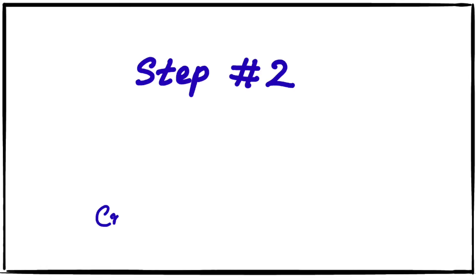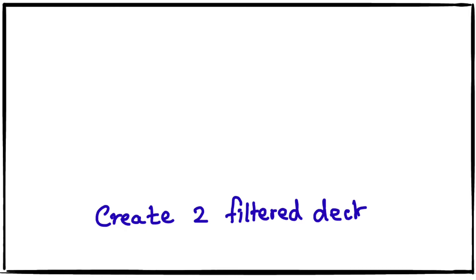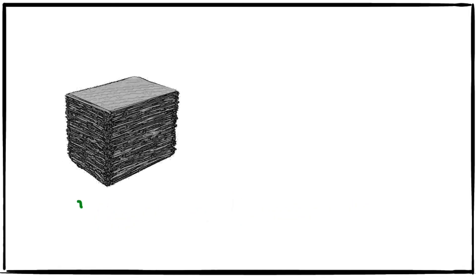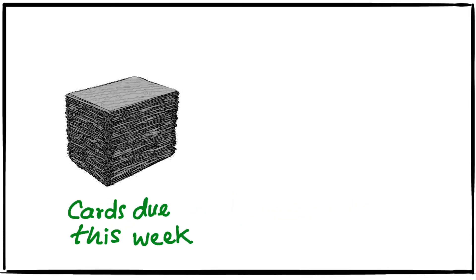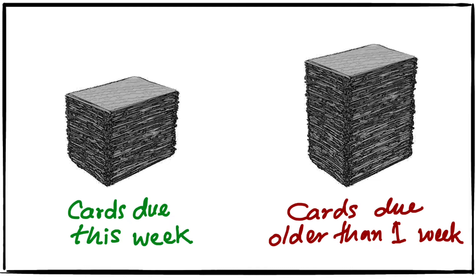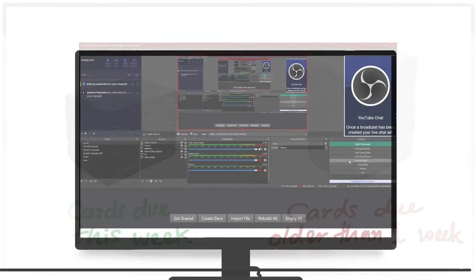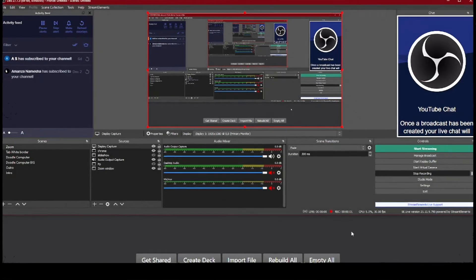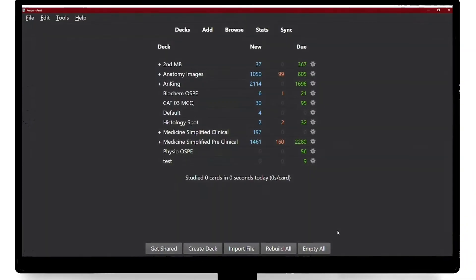Step number two: you have to create two filtered decks. One deck will show you all the cards that you had due within the past week. If it's older than one week, it's officially overdue and these cards go in the second filtered deck that shows all the cards that you missed out. This is the method recommended by the Anki user manual. I will quickly show you how to create these specific filtered decks.